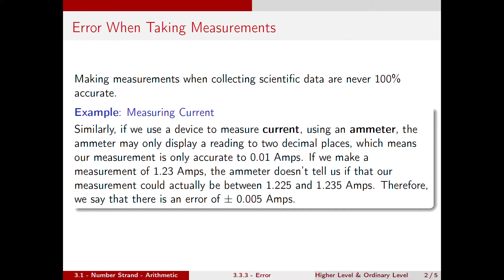If we make a measurement of 1.23 amps, the ammeter doesn't tell us if our measurement could actually be between 1.225 and 1.235.